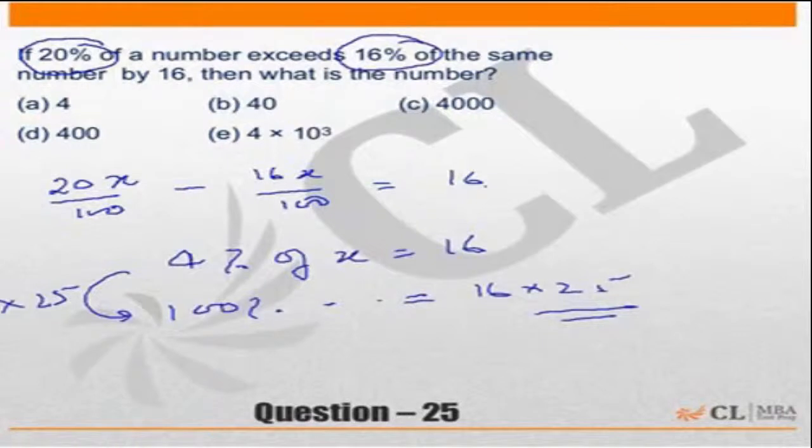Many times I have seen students doing this complete calculation. There is a waste of time. 20% minus 16% is 4%, and 4% is 16. 100% is how much is the question.